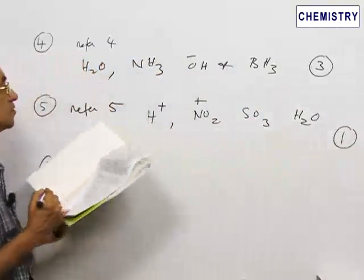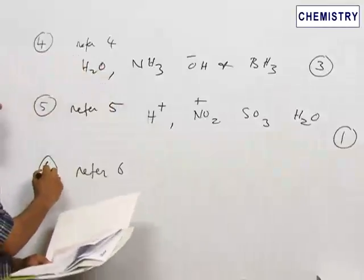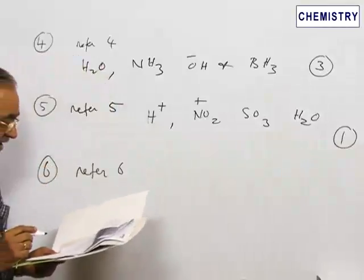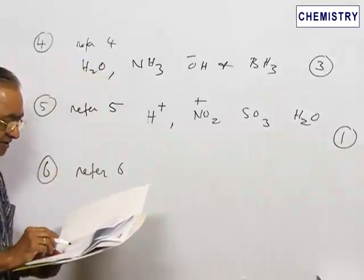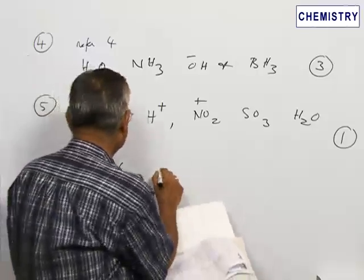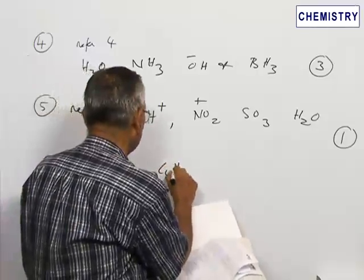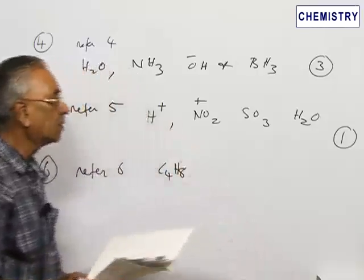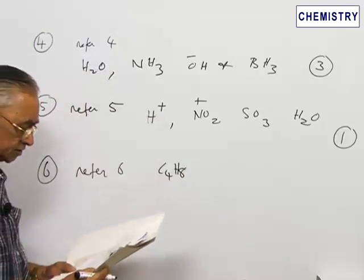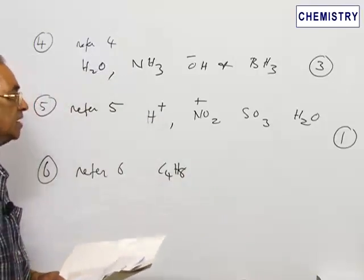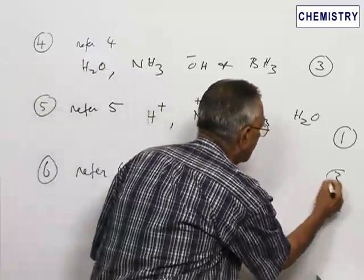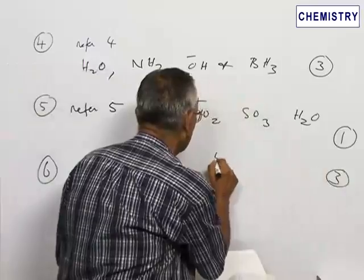So option 1 is the correct choice for question number 5. Now let us go to question number 6. The question asks for the total number of structural isomers possible for the compound C₄H₈. The options given are 2, 3, 5, and 4. The correct choice is option 3, which corresponds to 5 structures.